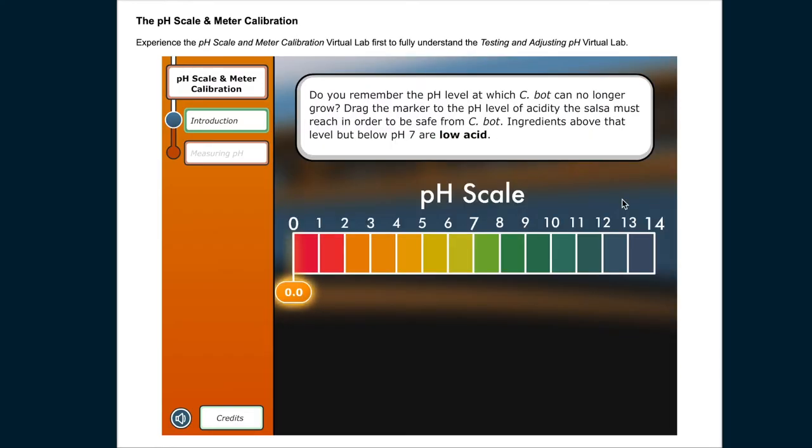Do you remember the pH level at which C. bot can no longer grow? Drag the marker to the pH level of acidity the salsa must reach in order to be safe from C. bot. Ingredients below that level are low acid.